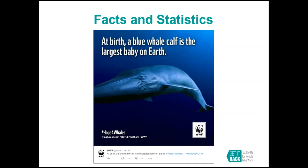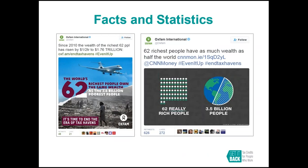From Oxfam International, an image based on the statistic that 62 of the richest people in the world have as much wealth as half the world. Just hearing the text, you can't really digest that quickly, but the image makes it easy to read and more striking. Those 62 people on the left have as much money as 3.5 billion people — that's an insane number, and that's why this image works. You can also show this kind of information in a chart or graph. Oxfam has wonderful illustrations of statistics, so check out their Twitter feed.